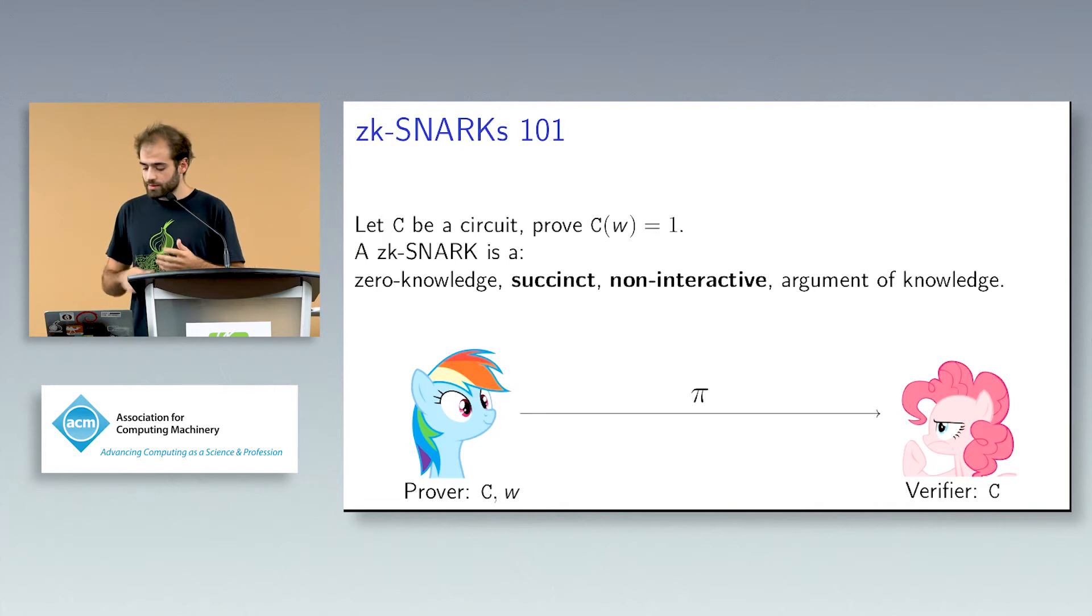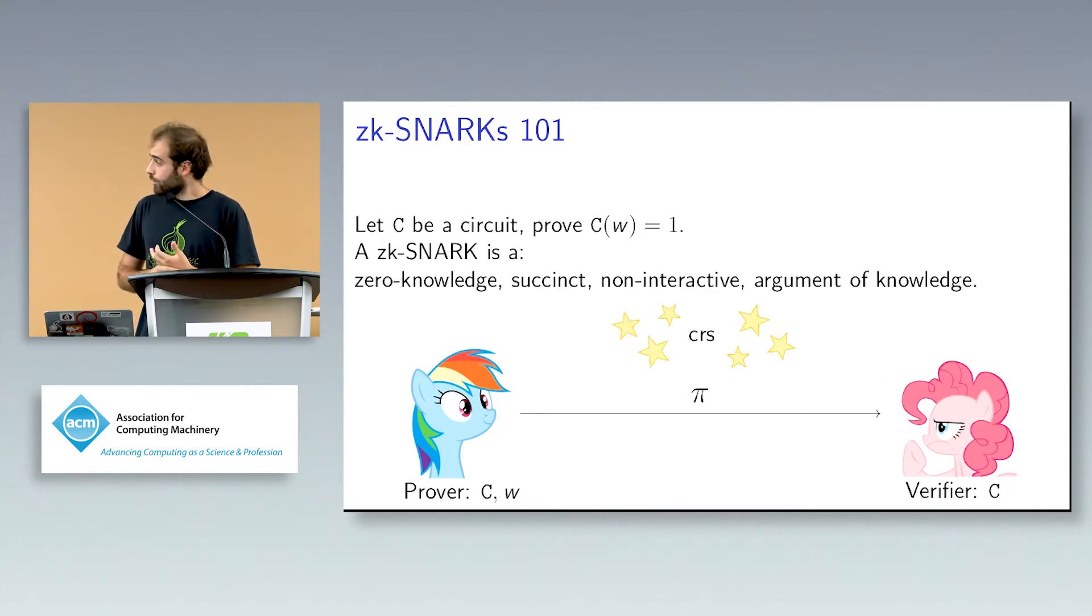Succinct and non-interactive are properties that the proof should have. Succinct basically means that the proof should be constant size independent of the size of the circuit, the statement. Another way of formally saying this is that verification should take less time than iterating through the whole circuit. Non-interactive basically means that we do not proceed through interaction. The proof goes like in a BAM, I give you the proof, you can verify. There is no round of interaction involved.